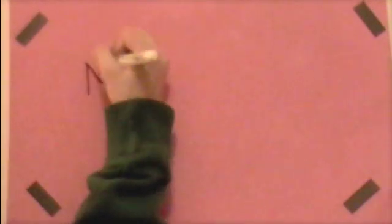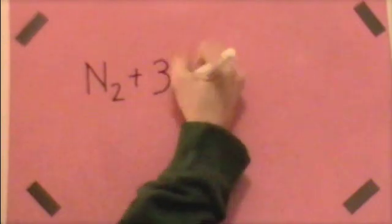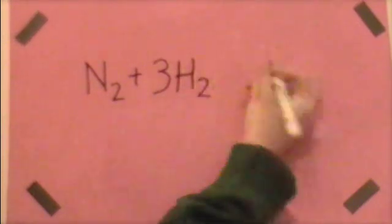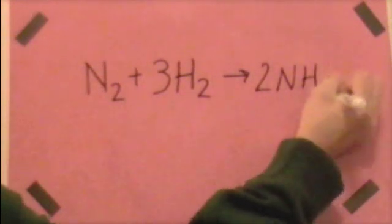If we have N2 plus 3H2, we get 2NH3. Remember to do stoichiometry on a balanced equation like this one.